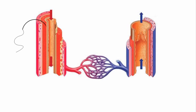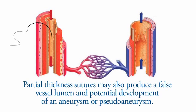In one study, authors found that full thickness sutures provided adequate continuity of the tunica intima with minimal platelet aggregation and anastomotic bleeding compared to partial thickness sutures. Partial thickness sutures may also produce a false vessel lumen and potential development of an aneurysm or pseudoaneurysm.